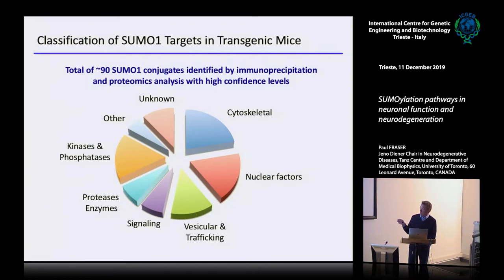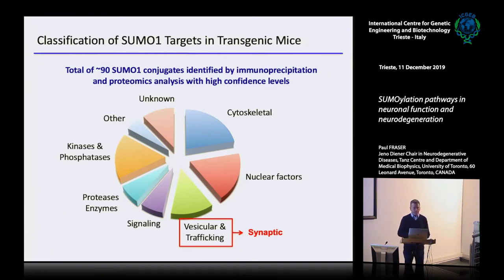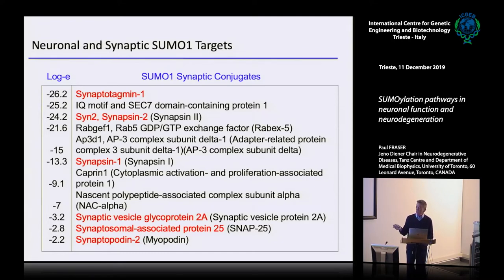Brian's lab helped us analyze the pull-downs, and we got about 90 very high-confidence proteins that were SUMOylated in different classes. The expected ones — nuclear proteins, kinases, proteases, and some signaling molecules — were known. But there were also a lot of unknown proteins identified. The ones we were most interested in, in terms of brain, were the vesicular and trafficking proteins, including synaptotagmin, both synapsins one and two, and a collection of synaptic vesicle proteins.